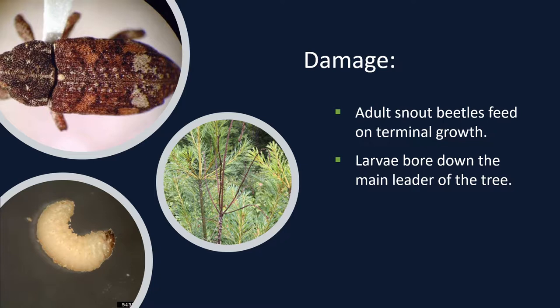In March to April, adult beetles emerge from their overwintering site, usually in the leaf litter on the ground, and begin laying eggs. These snout beetles, also known as weevils due to the shape of their heads, are small rust-colored insects between 4 and 6 millimeters long. They have irregularly shaped patches of brown and white scales on the front wings, and there is a large patch of white near the tip of the front wing. After the eggs hatch, the white larvae bore down through the main leader of the tree.